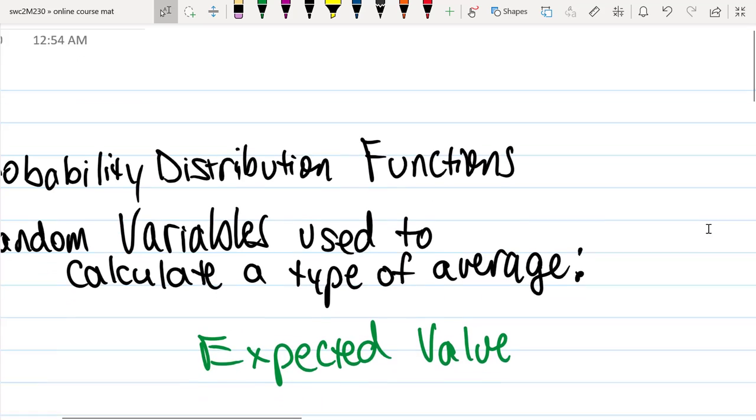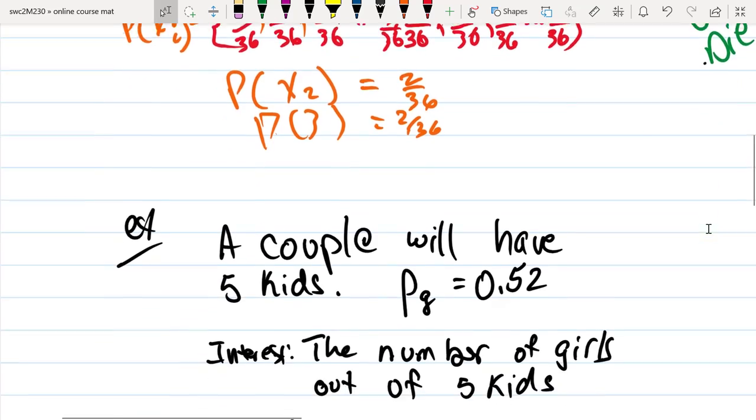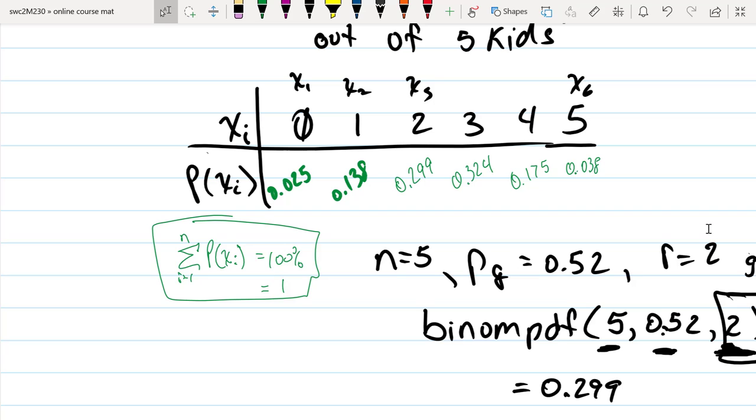What can we do with that? What I'd like to be able to do is use this information to determine expected values, like kind of average. On average, how many girls would you expect to have out of five?